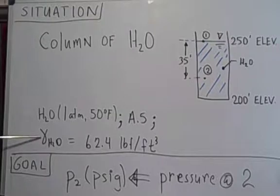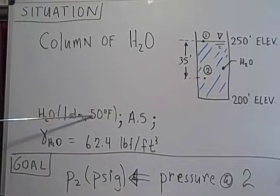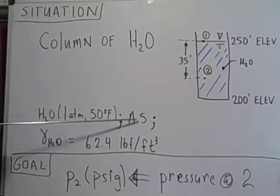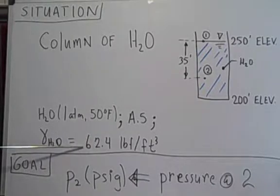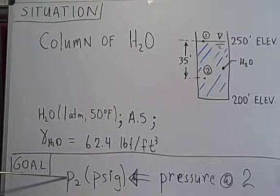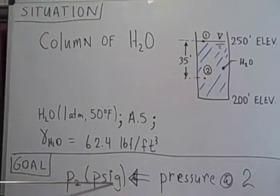We need the specific weight of water to solve this problem. We'll look this up at 1 atmosphere and 50 degrees Fahrenheit from table 8.5. The value is specific weight equals 62.4 pounds-force per cubic feet. Goal: find the pressure at location 2 in units of pounds-force per square inch gauge.